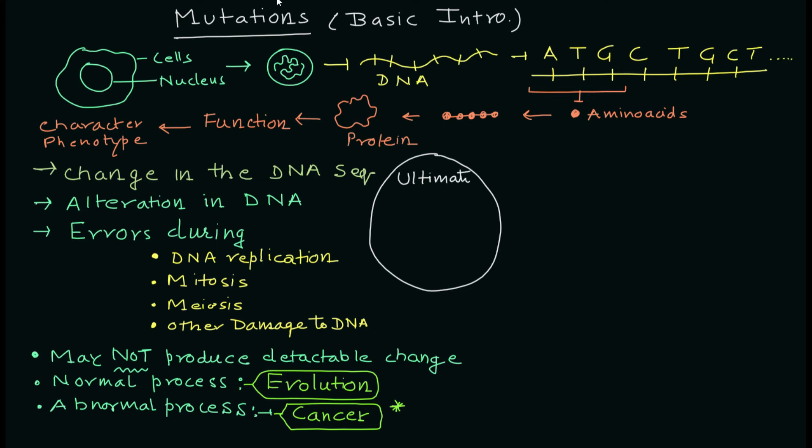I can call it as the ultimate source of genetic variation - mutation. Because constantly mutations are happening in our body, and because of that the next generation will have different types of genetic composition.